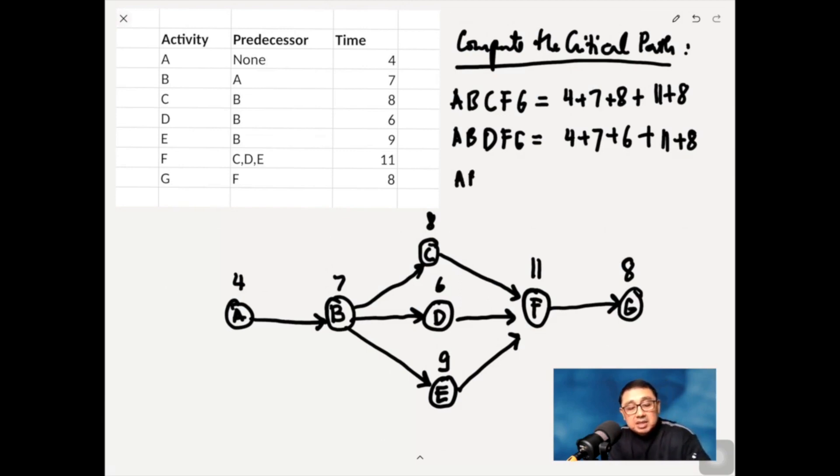Then the third one is A, B, E, and then F, G. So that's 4 plus 7, plus 9, plus 11, plus 8.